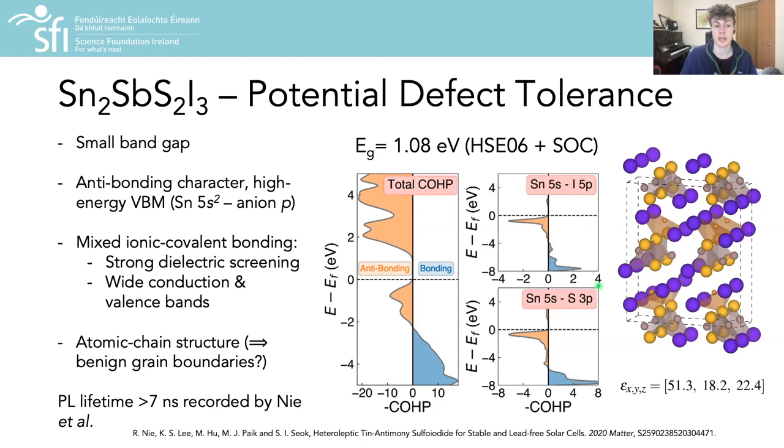We find mixed ionic-covalent bonding and thus strong dielectric screening, which as mentioned before can reduce the interaction of our mobile charge carriers with charged defects and thus reduce non-radiative recombination in the material, as well as wide conduction and valence bands.